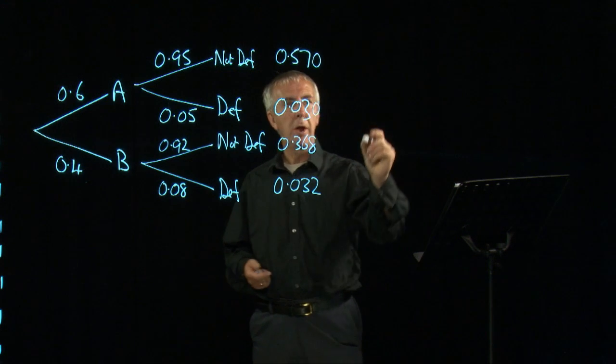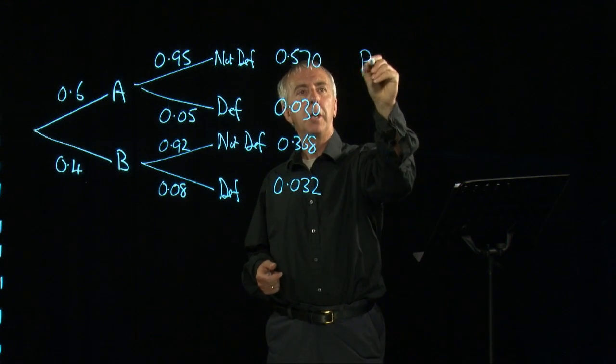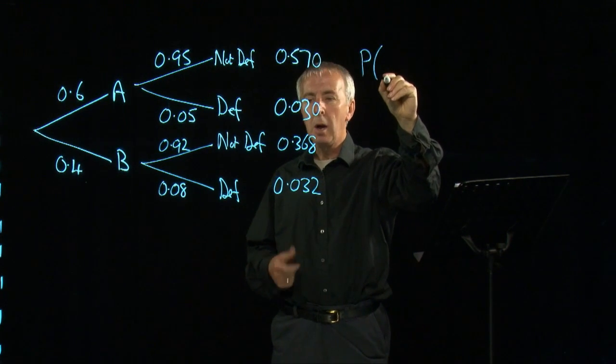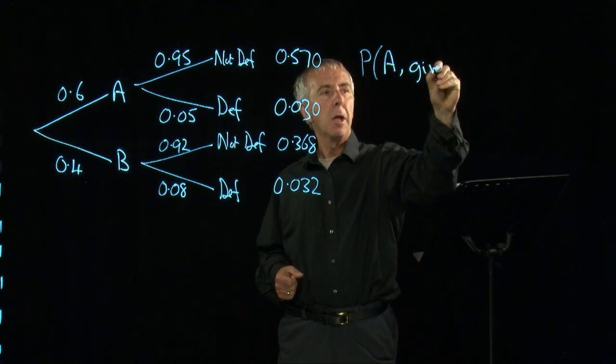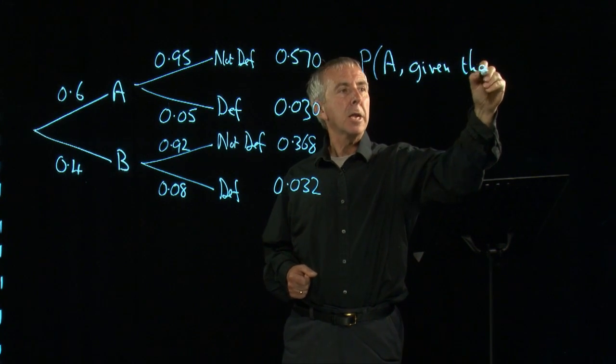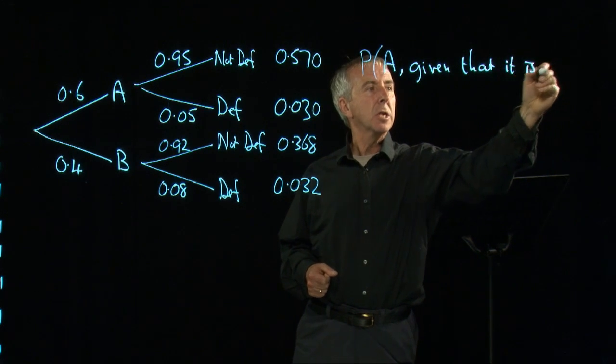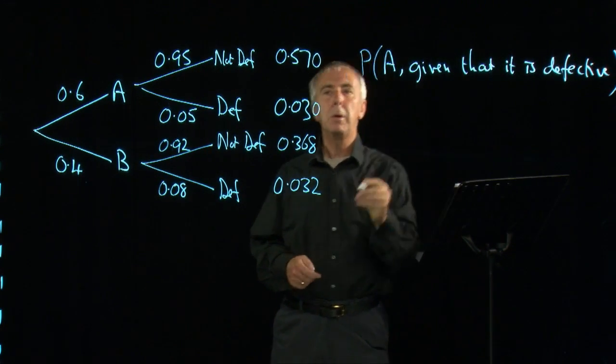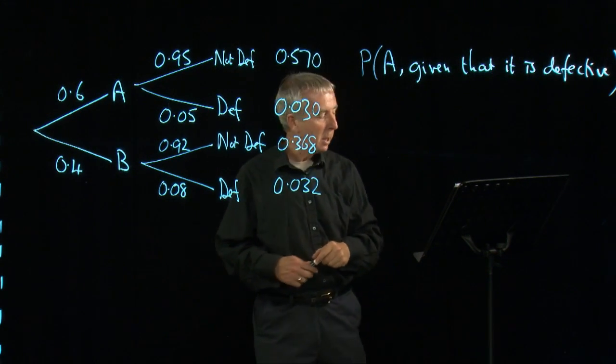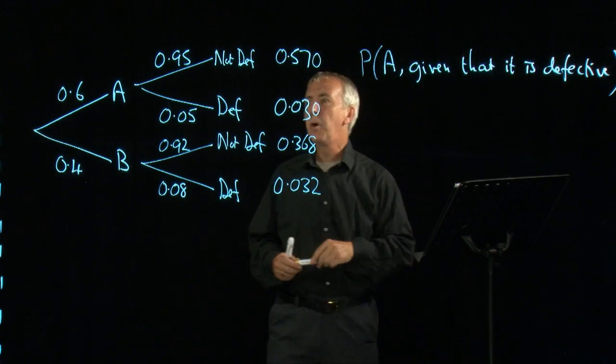We want to try and find it the other way round. What's the probability that the item came from machine A given that it is defective? Can we work this thing backwards? And the way we do this is as follows.